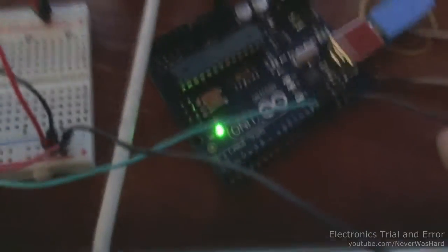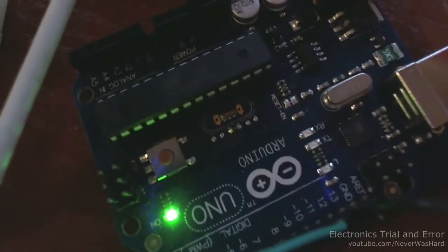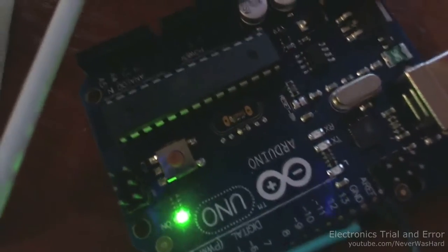The black wire is ground on the Arduino, and the red wire is plus 5 volts.